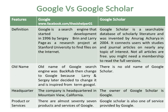Google Scholar is a searchable database of scholarly literature, invented by Anurag Acharya in 2004. It connects users with studies and journal articles on nearly any topic of interest. Not all articles are free — you might need a membership to read the full versions.